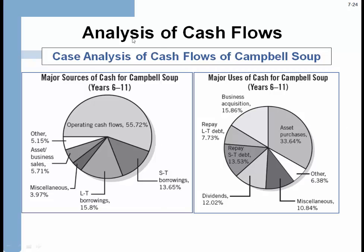Here's an analysis of the statement of cash flows for Campbell's Soup. Looking at their sources of cash, you can see operating cash, sales of assets, miscellaneous items, and borrowings — both long and short-term — shown in a pie chart. For uses of cash, they bought assets, made business acquisitions, repaid debt, and paid dividends. Adding the asset purchases and business acquisitions together comes to almost 49%, meaning they're primarily using operating cash flows to acquire new assets and businesses.